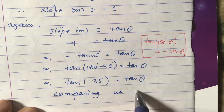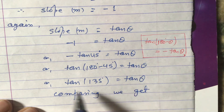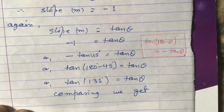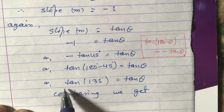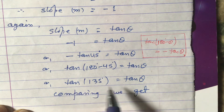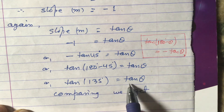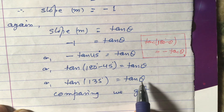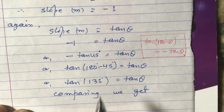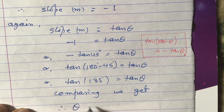We cannot cancel tan from both sides — that would be incorrect. By comparing, since tan 135° equals tan θ and both tan functions are the same, θ must equal 135°.